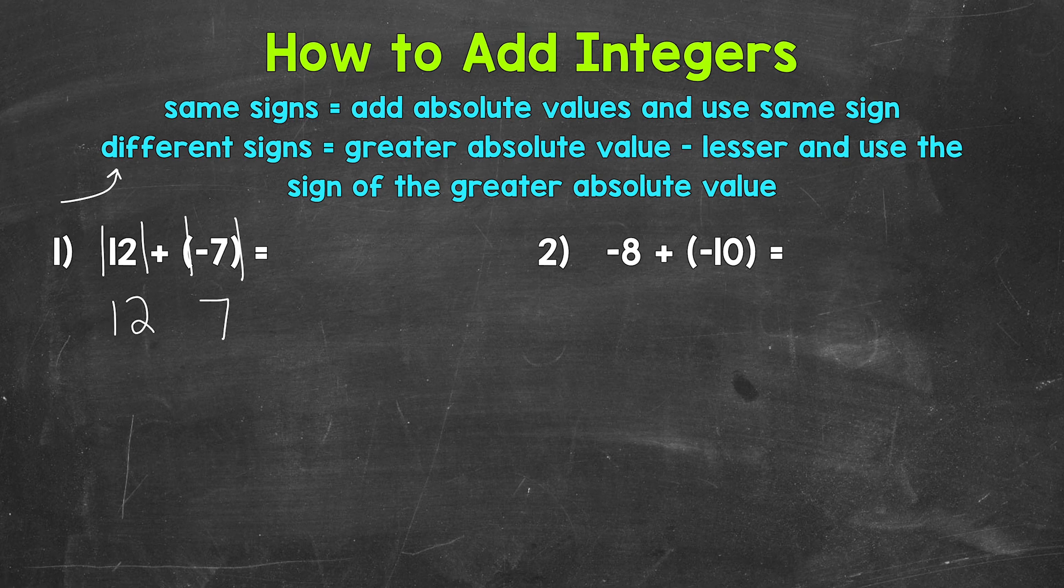Now we take the greater absolute value and subtract the lesser. These are already in order, so we can subtract. If the larger absolute value comes second, you can always switch the order to find the difference if need be. Let's subtract. So 12 - 7 = 5.